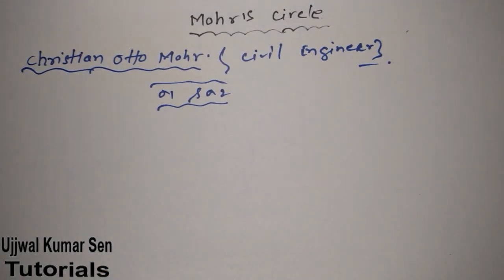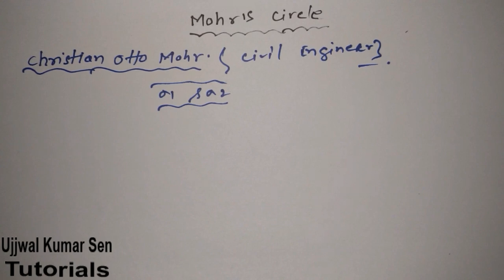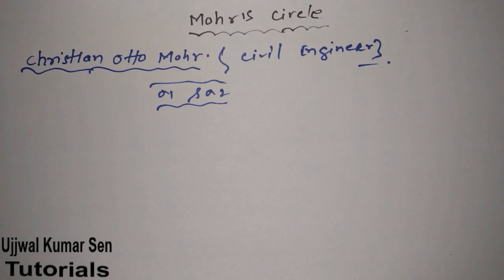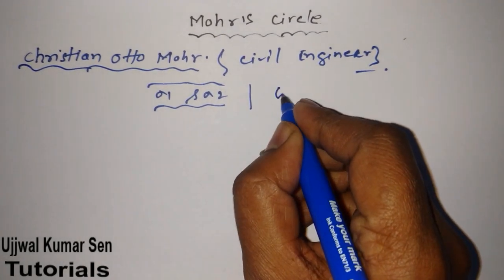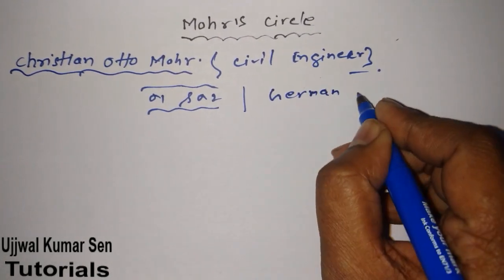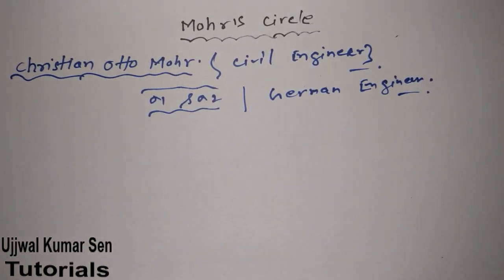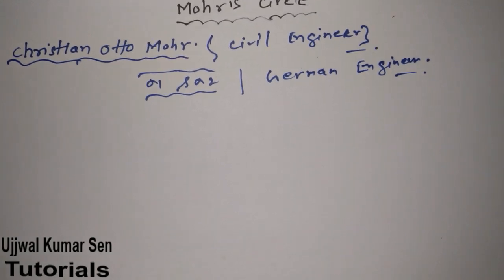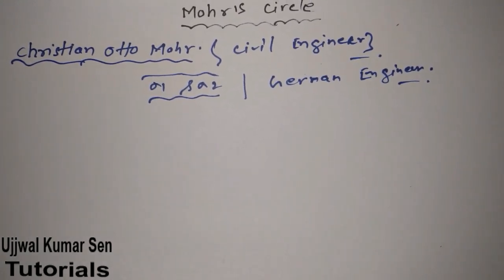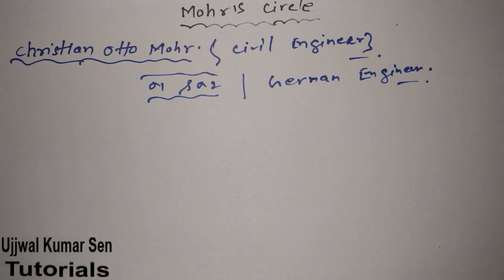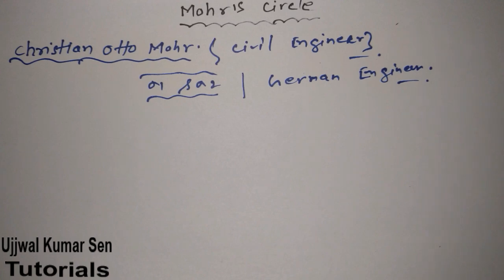This is a graphical method, which is different from other methods, and it is comparatively easy for a designer to find out principal stresses. That is why this method is quite popular. He is a German engineer and we must give credit to him for providing such a system. So what we are going to basically find out in this tutorial is sigma one and sigma two.